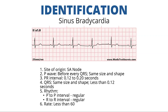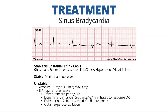Everything else about the rhythm will be normal. As you can see here, all our P waves are going to be the same — upright and looking the same. Our PR interval is going to be normal. Our QRS is going to be narrow, and it's just our rate that is going to be slow, less than 60.